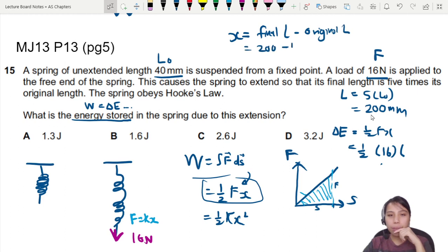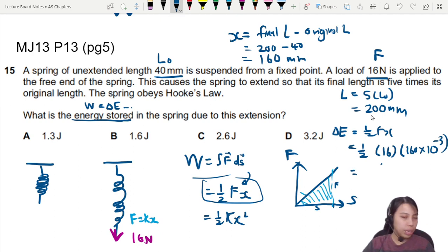So this will be 200 minus 40, giving me 160 mm. Okay. So we write here 160 times 10 negative 3. Okay. So when I press calculator, I should get about 1.28 joules.